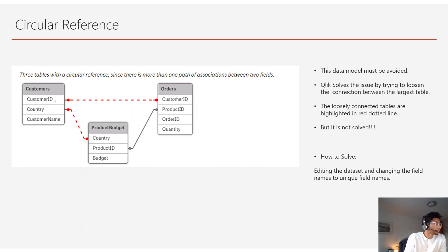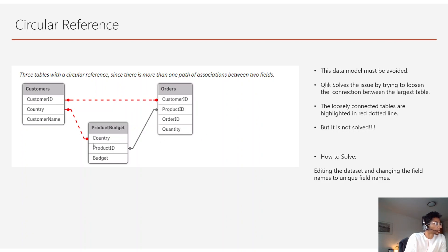Unlike synthetic keys, a circular reference isn't the same field appearing in two tables — instead, you have three different tables all connected to each other. For example: Customers is connected to Product Budget by Country; Orders has a customer_id linked to Customers and a product_id linked to Product Budget. So all three tables are connected to each other in some way, and when this data model loads, Qlik gets a circular reference and cannot make correct connections between the tables.